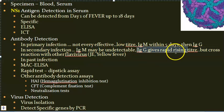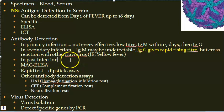However, IgG in secondary infection cross-reacts with other flaviviruses like Japanese encephalitis and yellow fever, so it is not specific. For past infection, low levels of IgG remain detectable for up to 60 years — which explains the lifelong protection from the first infecting serotype.